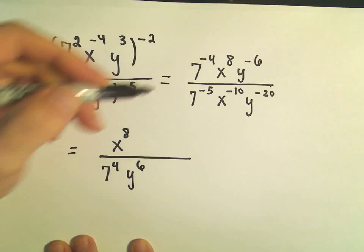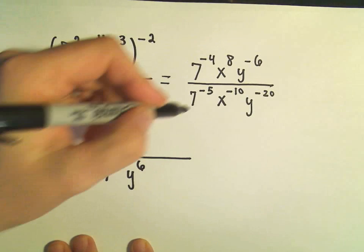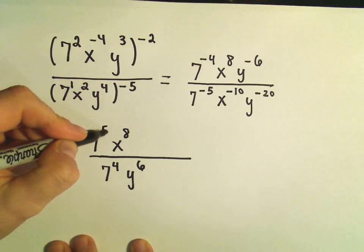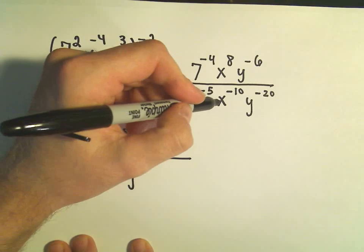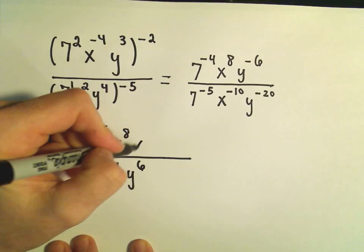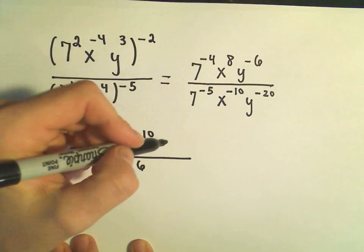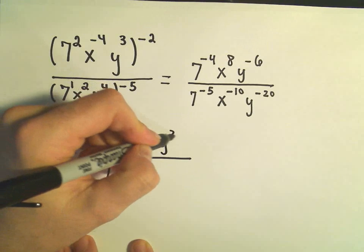And now I'm going to look at the denominator. I've got a 7 to the negative 5th. If I put that on top, it'll go as 7 to the positive 5th. My x to the negative 10 will go upstairs as x to the positive 10. And my y to the negative 20 will go upstairs as y to the 20th.